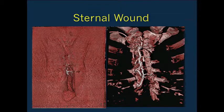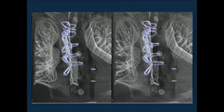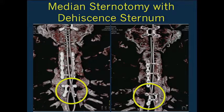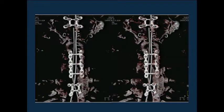Sternal dehiscence occurs in up to 7% of patients and is more common in difficult patients—obesity, patients on steroids, chronic renal disease, or reoperations are all predisposing factors. We've seen several cases where one of the sternal wires is pushing upward, causing local inflammation, breakdown, and often abscess formation. One of the nice things about post-processing the data is the ability to look at the orientation of the wires in both portions of the sternum, with color coding showing the mapping.